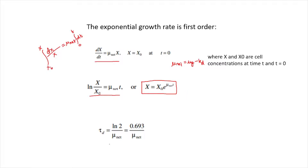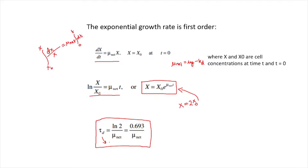We can calculate the doubling time td. Setting x = 2x0 in the equation x = x0 · e^(mu_net · t), we get td = ln2 / mu_net = 0.693 / mu_net. These two formulae are very important because questions have been asked many times in GATE on calculating the doubling time or calculating the cell mass concentration in the exponential growth rate. Please remember these two formulae.